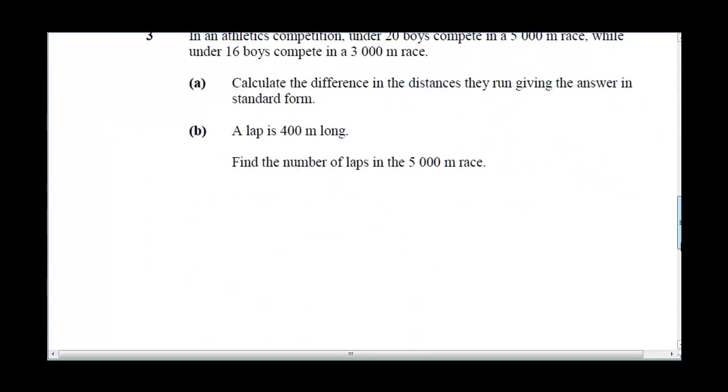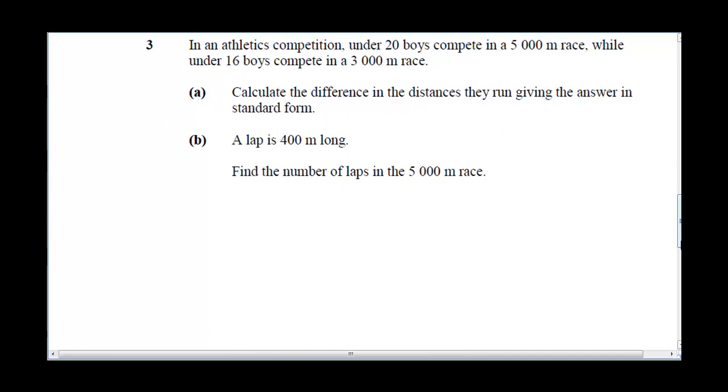Question 3 says: In an athletics competition, under 20 boys compete in a 5000 meter race, while under 16 boys compete in a 3000 meter race. Part a says calculate the difference in distance they run, giving the answer in standard form.